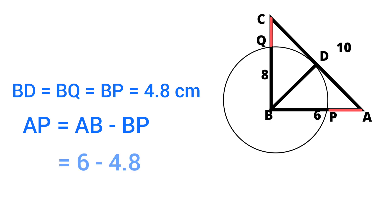The length of AB is 6 centimeters minus length of BP is 4.8 centimeters. So the length of AP is 1.2 centimeters.